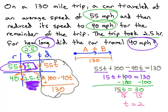We need the time at 40 miles per hour. The cell clearly tells us that this is 2.5 minus T, which we just found out was 2. 2.5 minus 2 is 0.5 hours, or the car traveled for 30 minutes at the slower rate of 40 miles per hour.